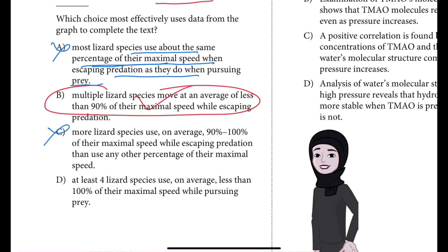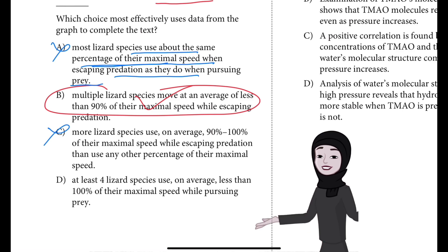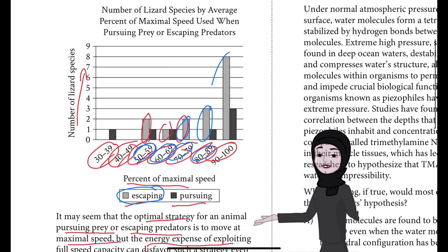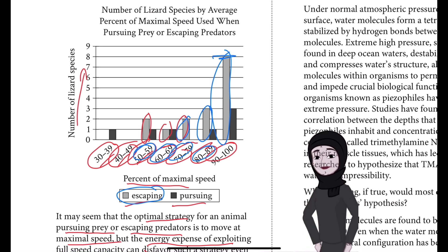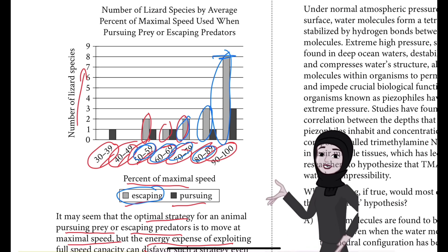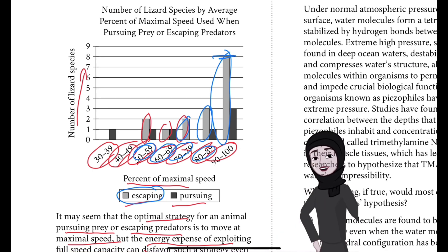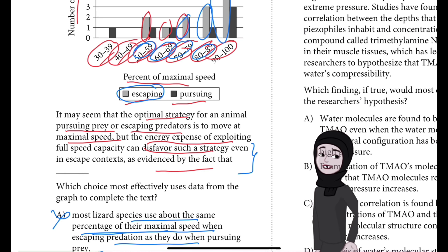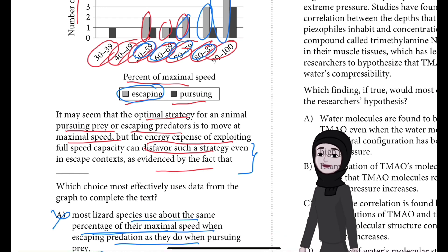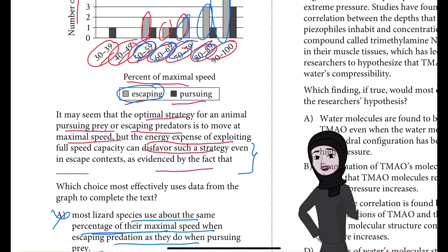Choice C is incorrect. It is true that in the graph the percent category with the largest number of species using maximal speed while escaping predators is 90–100%, with 8 species in fact. However, these data don't complete the text, which is concerned instead with how animals are discouraged from using maximal speed. We are concerned with disfavoring such a strategy — how animals are discouraged from using maximal speed even when escaping predators because of the energy required.